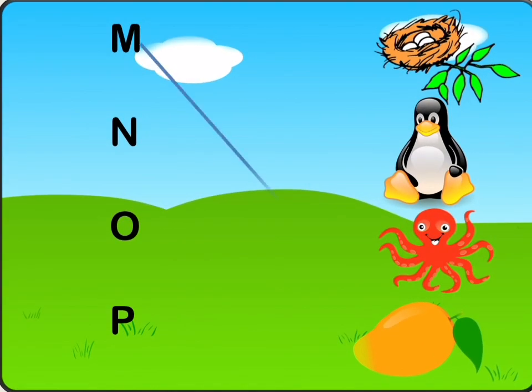M is for Mango. N is for Nest. O is for Octopus. P is for Penguin.